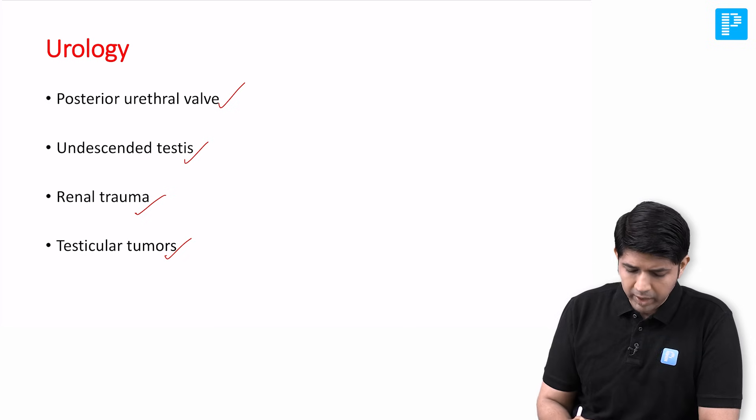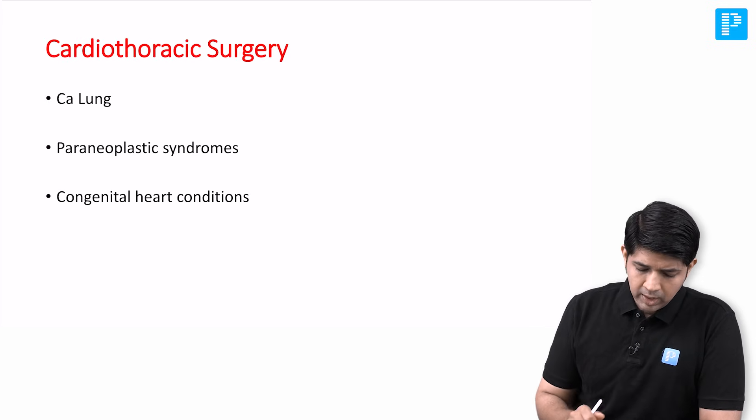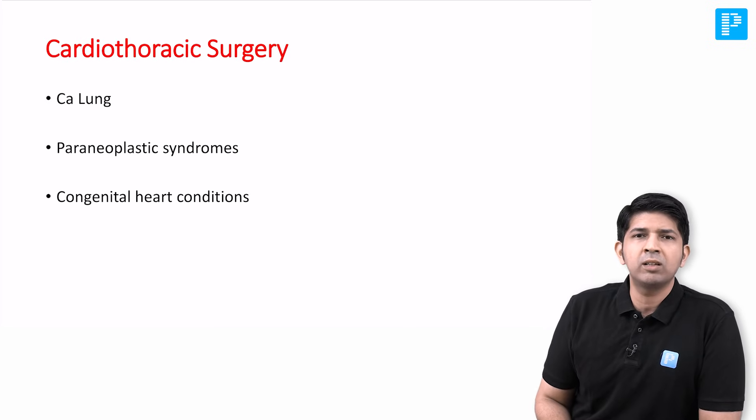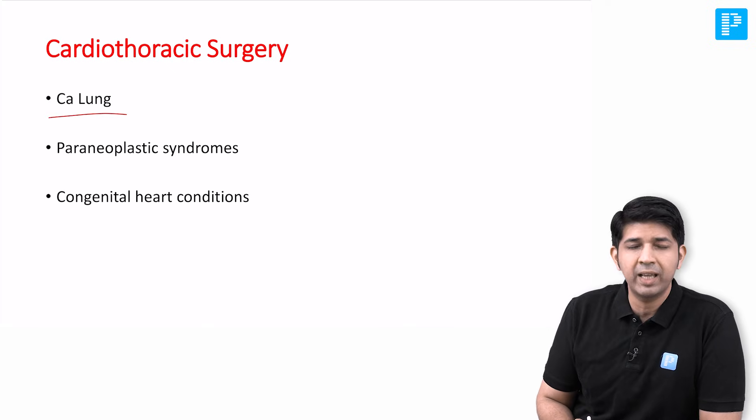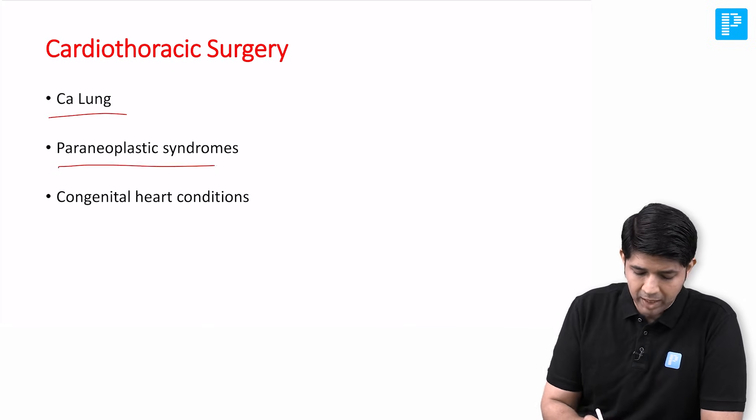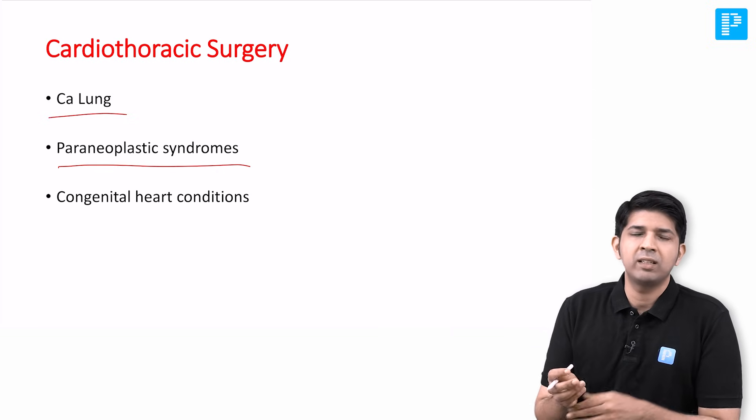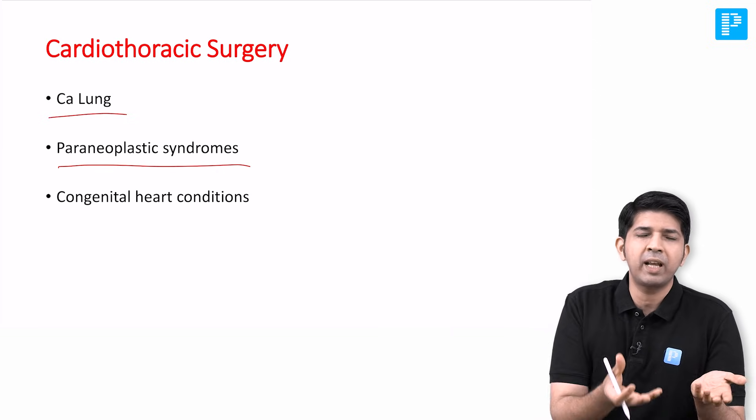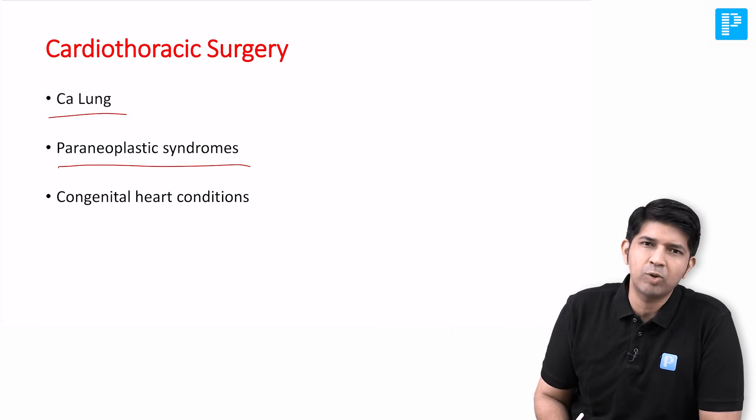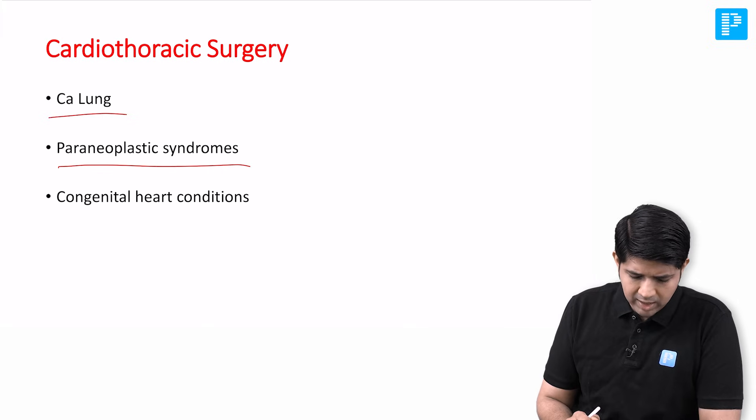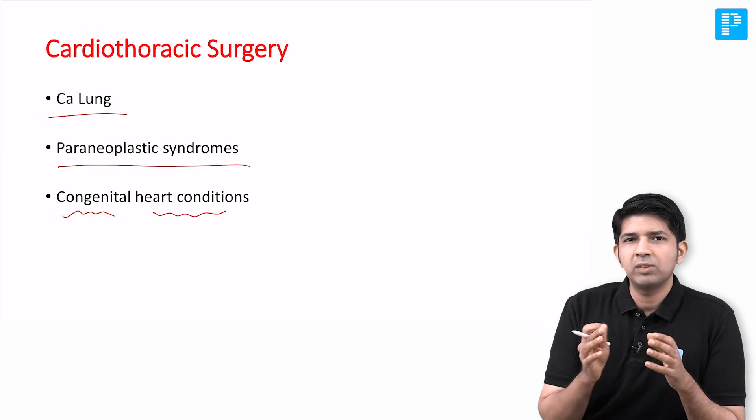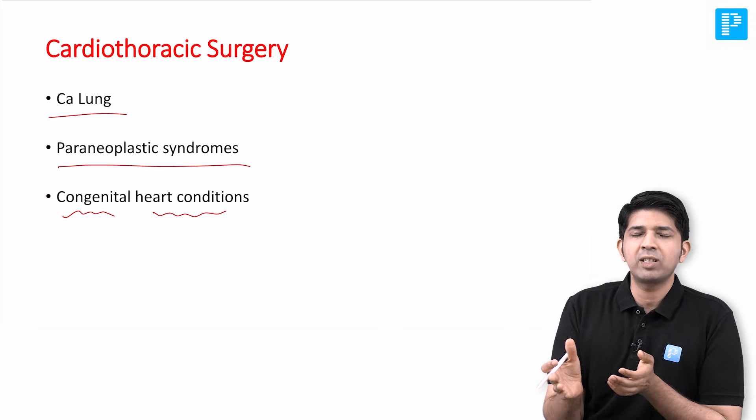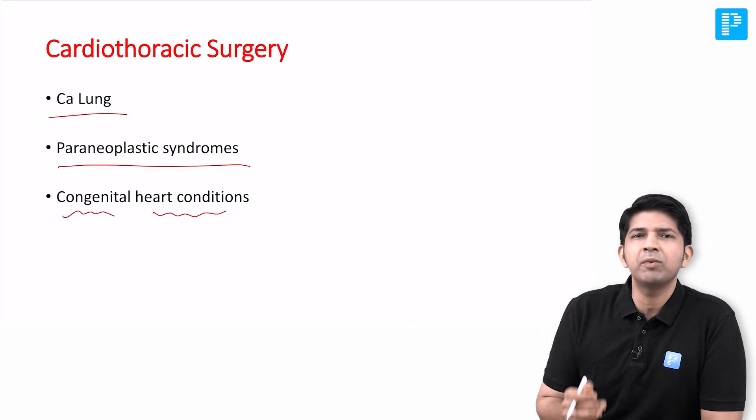Moving on to cardiothoracic surgery, again not many surprises here. Good number of questions from CA lung, then there were some questions on paraneoplastic syndrome - as in which particular cancer you're going to find these paraneoplastic symptoms, that was small cell lung cancer. Then you had some questions on congenital heart conditions. So if you were interested into cardiothoracic surgery, you should have looked into all of these, and there were a few questions based on them.